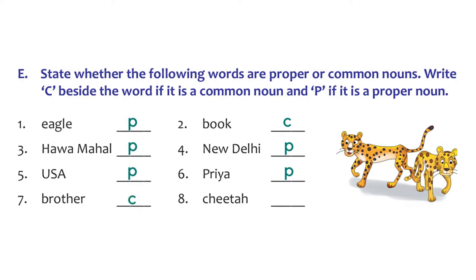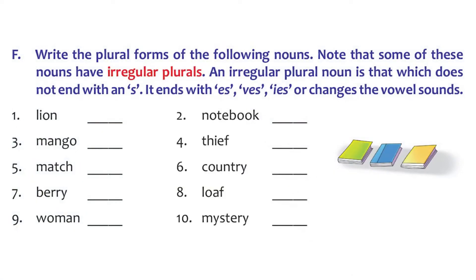The last one is Cheetah - that's a proper noun. Now we're going to look at irregular plurals. It's very important to understand the plural forms of words, and there are a few rules to remember. Let's try the first one: lion. You can just add S and it becomes lions. For other words you can add ES, VES, or IES. The second one is notebook - just add S at the end and it becomes notebooks. The third one is mango.